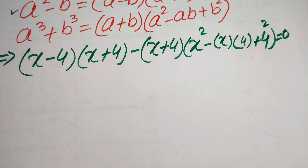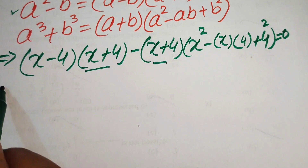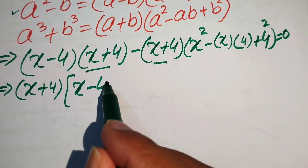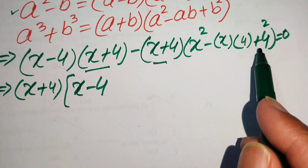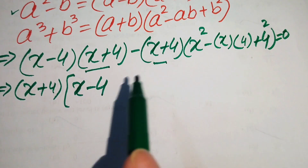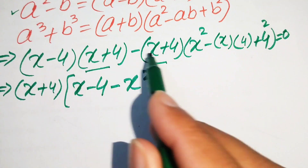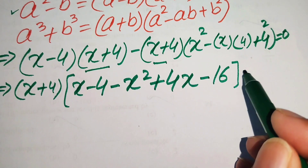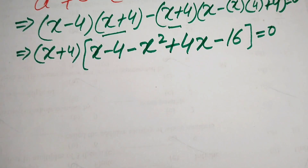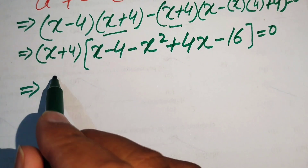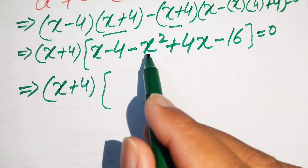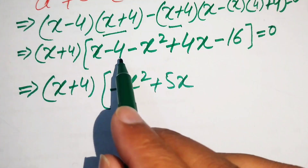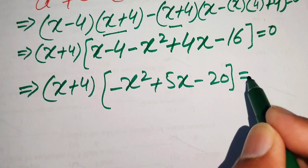We see that (x plus 4) is a common factor. Taking (x plus 4) common, the remaining terms are (x minus 4) from the first part. After distributing the negative sign across the cubic factor terms, we get: (x plus 4)(x minus 4 minus x squared plus 4x minus 16) equals 0. Combining like terms inside the bracket: minus x squared plus 5x minus 20 equals 0.